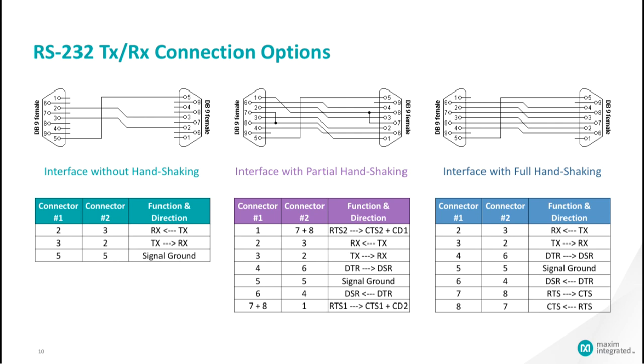An RS-232 interface without handshaking uses one transmitter and one receiver. With partial handshaking, it uses four transmitters and two receivers. With full handshaking, it uses three transmitters and three receivers.